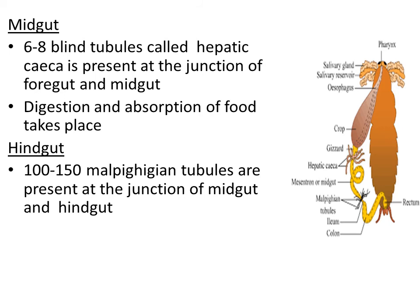The function of Malpighian tubules is to absorb waste from the hemolymph region. In cockroach, the lymph is mixed with the blood — called hemolymph — which is a kind of body fluid. Within this body fluid, impurities are added by metabolic activities. The nitrogenous waste materials present in hemolymph are absorbed by the Malpighian tubules. So Malpighian tubules absorb the waste present in the hemolymph.